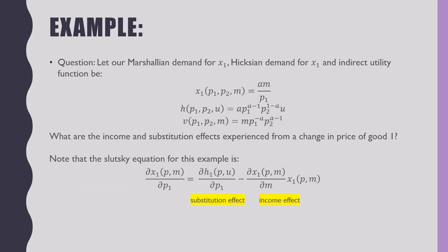let our Marshallian demand for good x1, Hicksian demand for good x1, and indirect utility function be the following. What are the income effects and substitution effects experienced from a change in the price of good one?